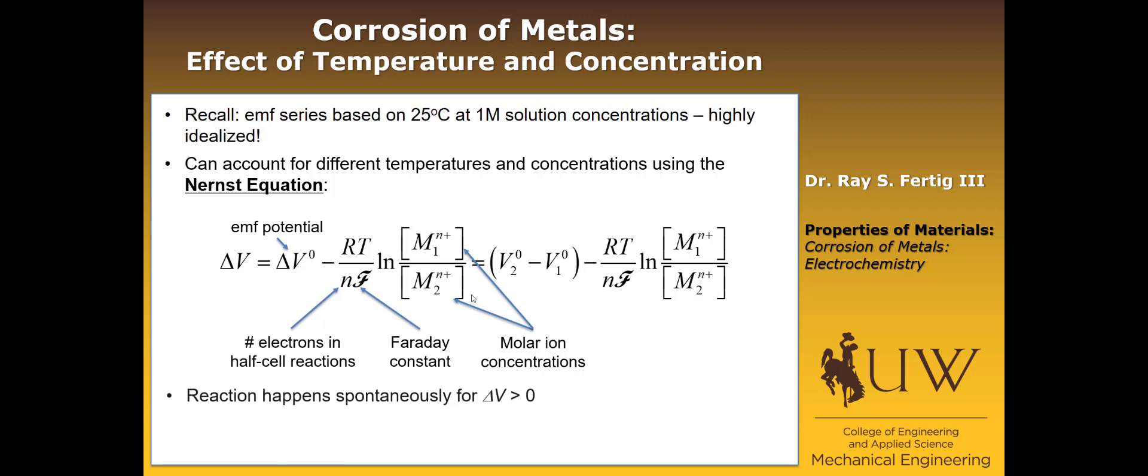Why does this all matter? I want to tell you first that reactions are going to happen spontaneously when delta V, the voltage potential, is greater than zero. If you look at this equation, you could choose delta V0 to be greater than zero, but you could adjust the temperature and/or the molar concentrations in such a way that by changing either or both, you could actually stop or reverse the reactions, changing the cathode to the anode and the anode to the cathode. Just be aware that the environment that it's in can play a role as well in terms of the likelihood of reaction as well as even the direction that the reaction proceeds.